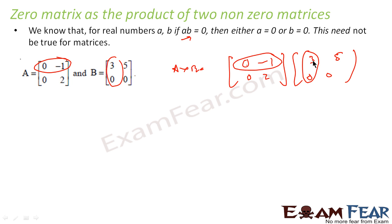What do you get? 0 into 3 is 0, so you get 0 into 3 is 0 plus -1 into 0 is 0. The second element is first row, second column: 0 into 5 is 0 plus -1 into 0 is 0. The next element is second row, first column: 0 into 3 is 0 plus 2 into 0 is 0. So what we are getting here is 0, 0, 0, 0.